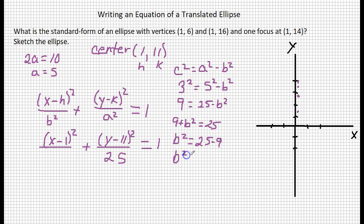So b squared equals 16, square root of 16 is 4, so b equals 4. Now, b squared is 16, so we can put our 16 here. We've got our equation.